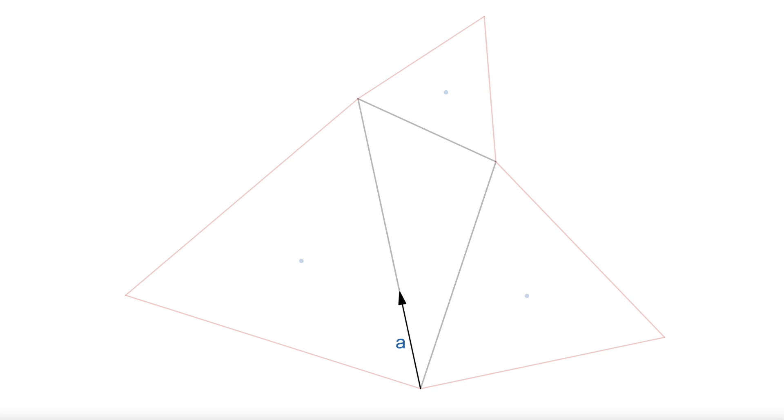Rotating the vector a 60 degrees counterclockwise creates a vector that I'll call a prime. As we saw moments ago, adding that to a gets you to the center of the triangle built on that side. Rotating it by another 60 degrees gives us a double prime, and that can bring us to the same center from the other direction.